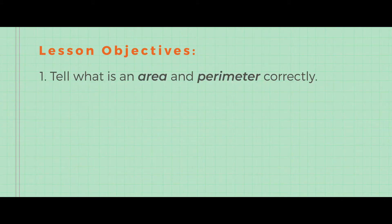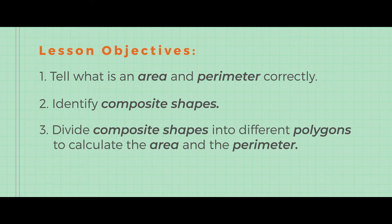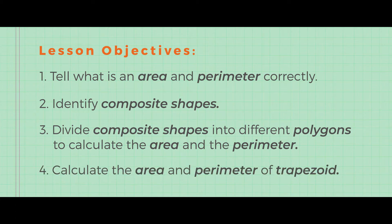Number one, after this lesson you should be able to define or tell what is an area and what is a perimeter. Number two, you should be able to tell what are composite shapes. Number three, you should be able to break down or divide the composite shapes into shapes that can be easy for you to calculate the area and the perimeter. Next, you should be able to calculate the area and the perimeter of the trapezoid. Please be attentive and attend the lesson carefully.